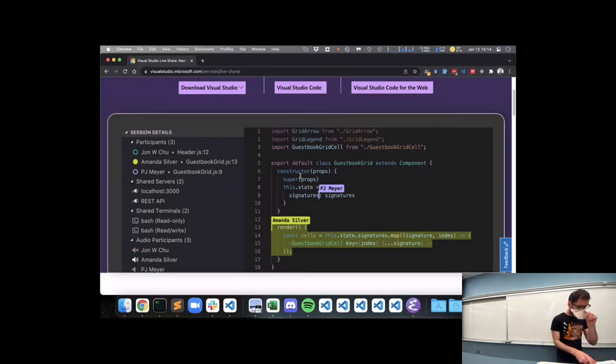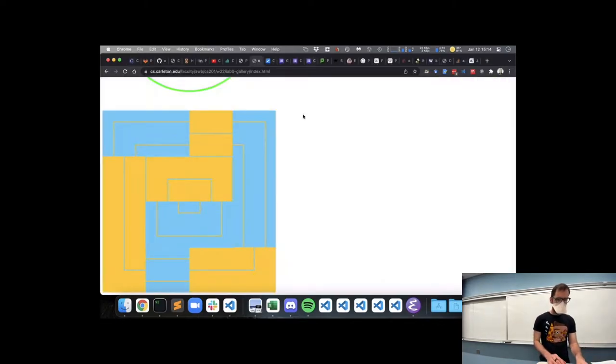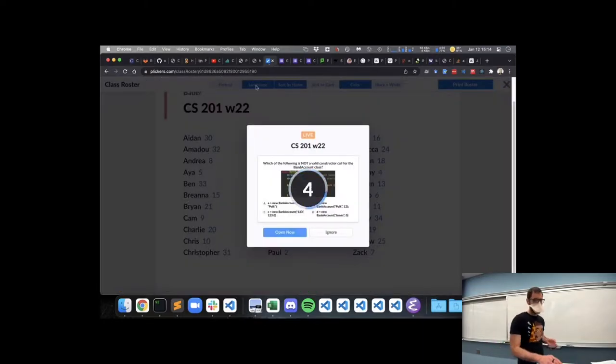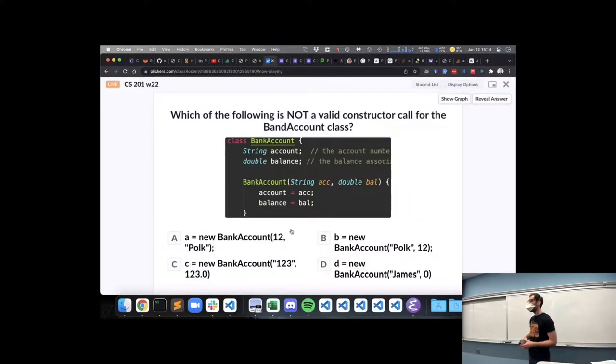All right, so let's do a little bit of review. First up, I have a bit of code here, the start of a class definition for a bank account class. It has two instance variables or fields—an instance variable and a field are just two terms for the same thing—a string and a double. And defined here is a constructor to initialize those fields. So among these four answers down here, and imagine each one is all on its own line, one of those is not a valid constructor call, and the other three are. So take a moment to identify the one that is not valid.